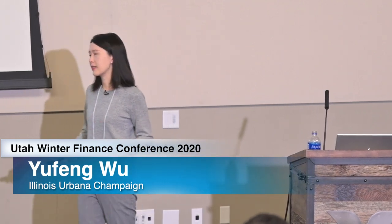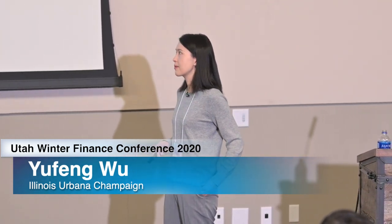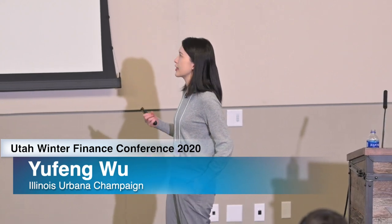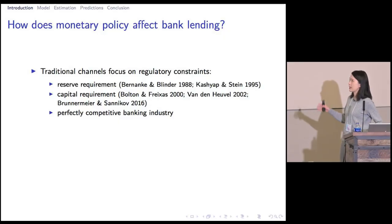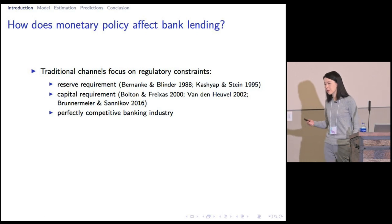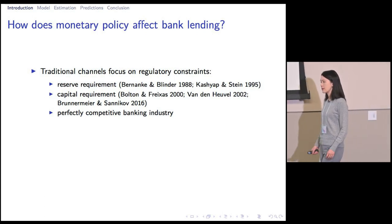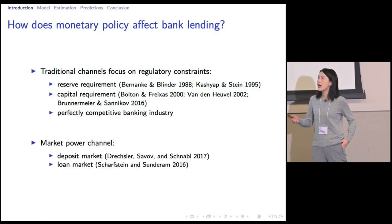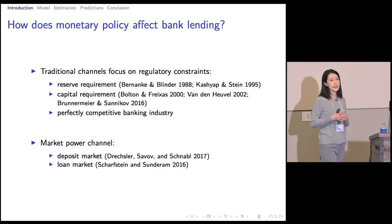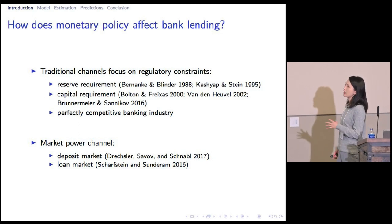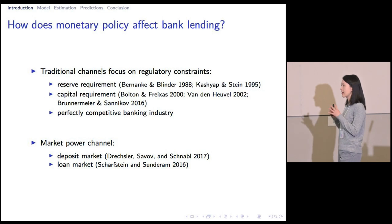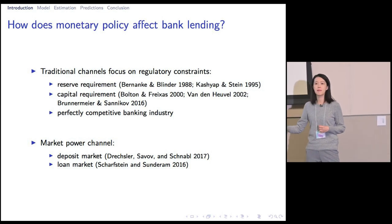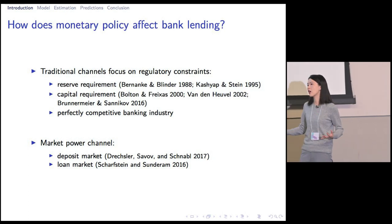Prior papers looking at this topic focus on the role of regulations. They argue it is, for example, the opportunity cost imposed by the reserve requirement or the capital requirement that determines how banks are going to react to the monetary policy. One implicit assumption these papers make is that the banking industry is perfectly competitive. More recently, an emergent literature takes an I.O. perspective, arguing that banks have oligopolistic market power, and it is the strategic interaction among competing banks that determines how sensitive they are to monetary policy.